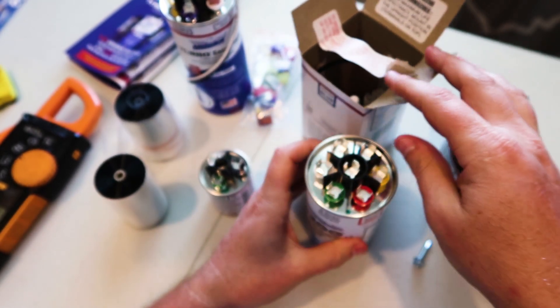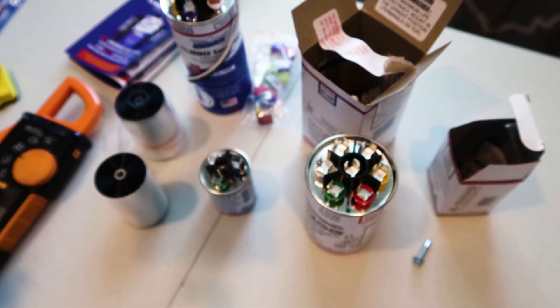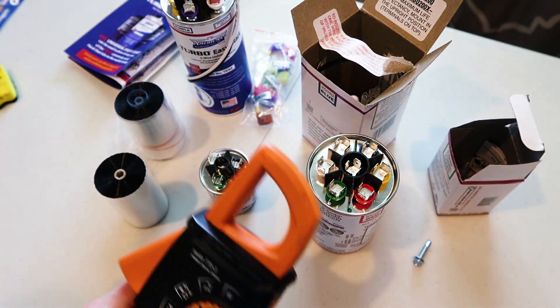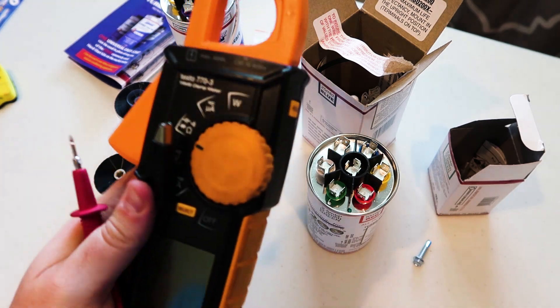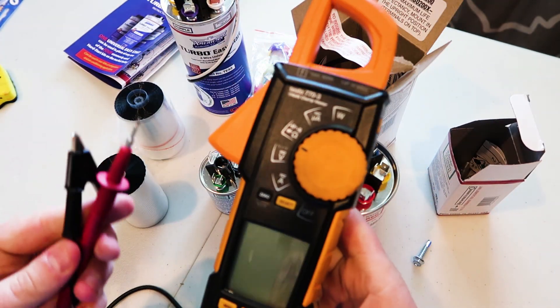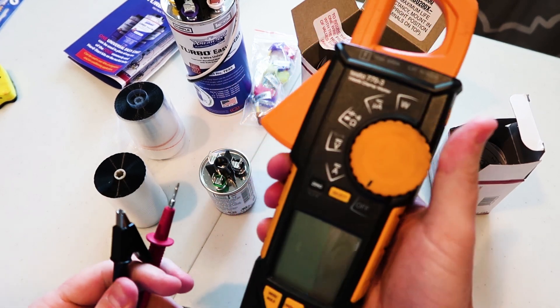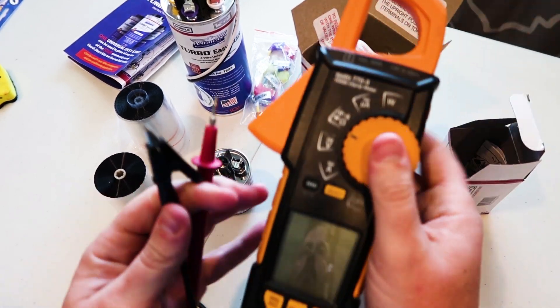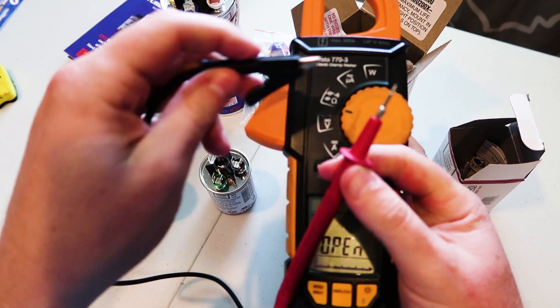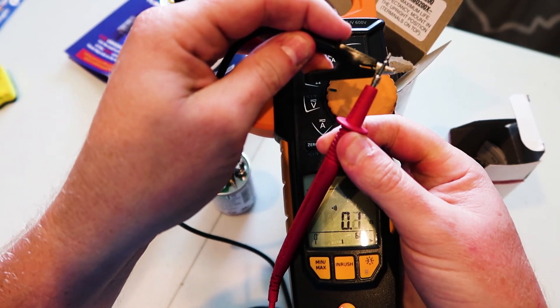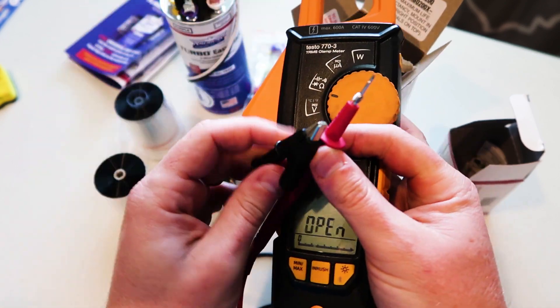And so now we're going to check and see with my meter, my Testo 770-3 and show you what I would suggest doing before you install any capacitor, which is test the capacitor before you install it. And then first test your meter. So the first thing to do, put your meter on the ohm scale, make sure that your leads and your meter are working by touching them together, making sure they ring out and read near zero ohms. So we're good. All right, so I always do that first.